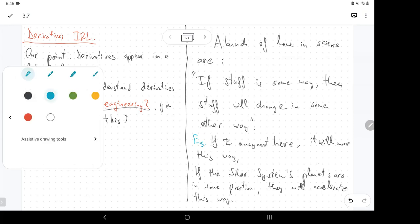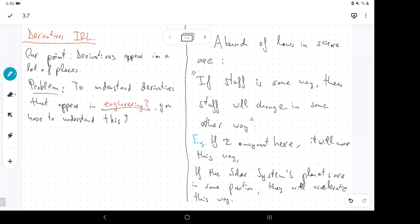If the solar system planets are in some position and have some velocity, they will accelerate this way. So it's always, there are so many things, so many laws that look like, if something is like this, then it's going to change in some other way. And most useful laws have some sort of measurement.